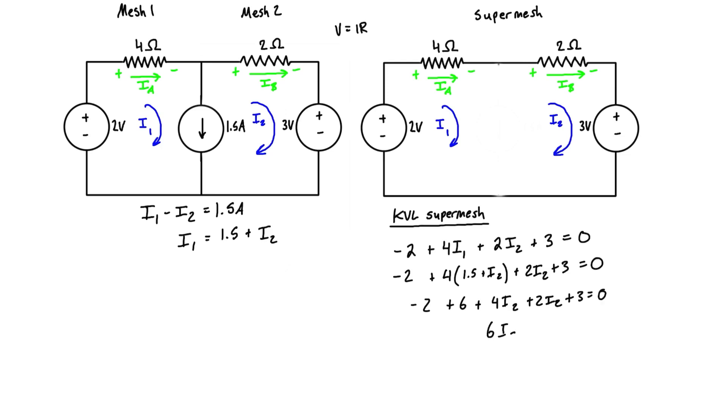So we've got 6 I2 plus 7 is equal to 0. I2 is equal to negative 7 over 6, and that also means that I2 is equal to negative 1.167, if you prefer decimal places, and that is amps.